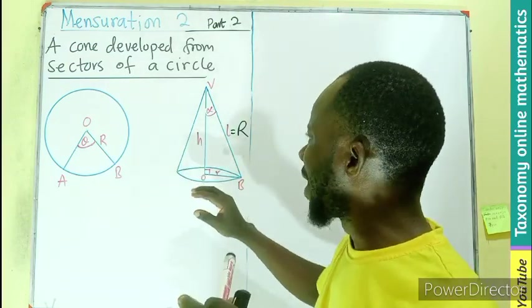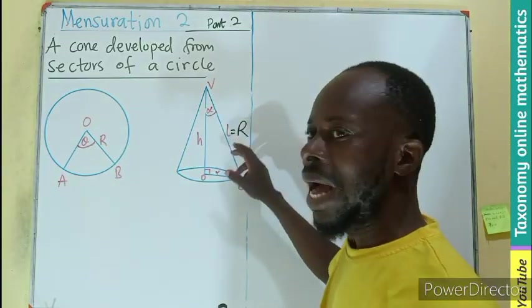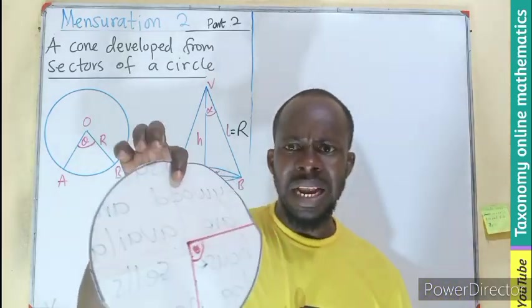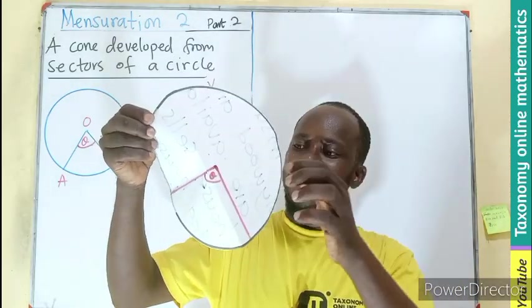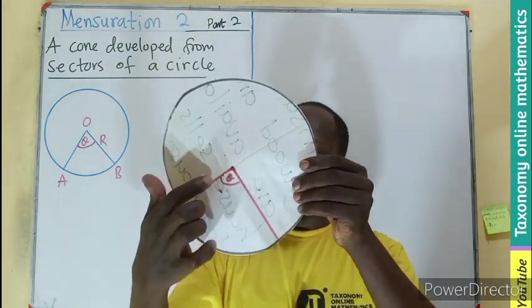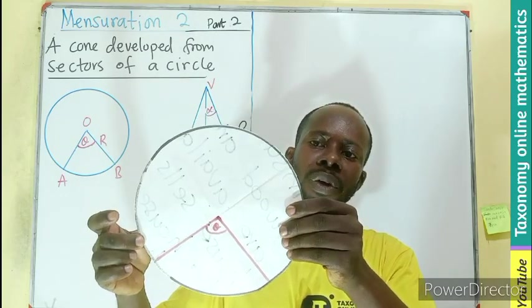We want to see how we can relate the small r, the capital R, and the L and the R together. Let's take something like this. We can see this is a circle with our sector with the red lines. So if we take out this minor sector, we can use it to form a cone.